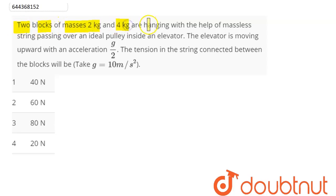Question is: Two blocks of masses 2 kg and 4 kg are hanging with the help of a massless string passing over an ideal pulley inside an elevator. The elevator is moving upward with an acceleration g by 2.